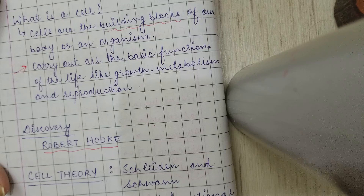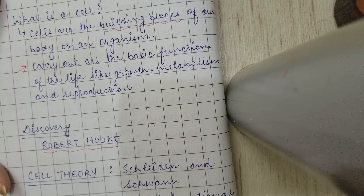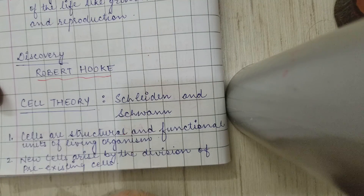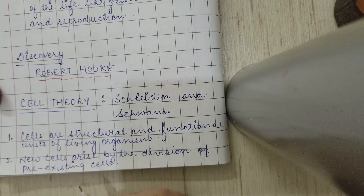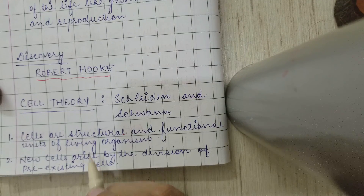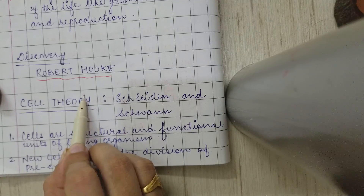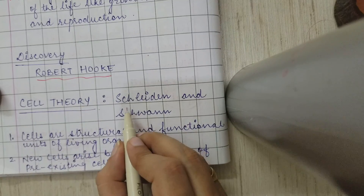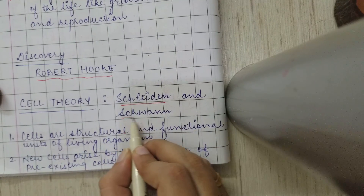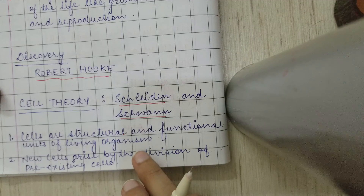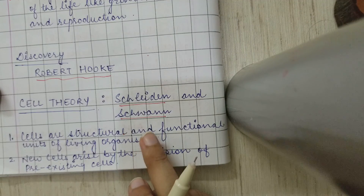With the invention of the electron microscope, it became possible to view cells very minutely. The concept that all living beings are made up of cells was explained by the cell theory. This cell theory was given by Schleiden and Schwann, and this is an important question from the exam point of view — who proposed the cell theory.